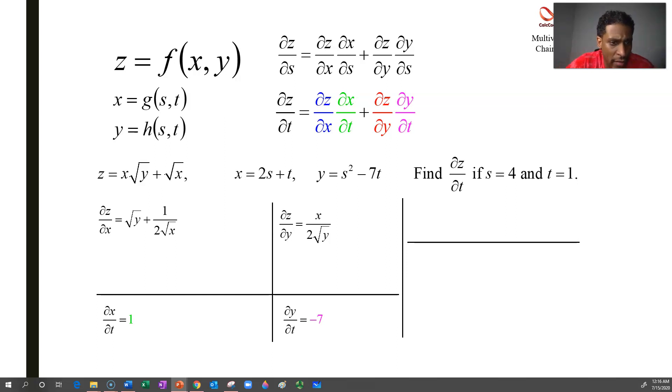Now, in the x and y partial derivatives, the formulas need to be, what needs to be plugged into them is an x and a y. Well, we know the s and the t. We don't know the x and the y. So when s is 4 and t is 1, you can plug them in and figure out the y. 2 times 4 plus 1. x is equal to 9. And y is 4 squared, 16 minus 7. Also 9.